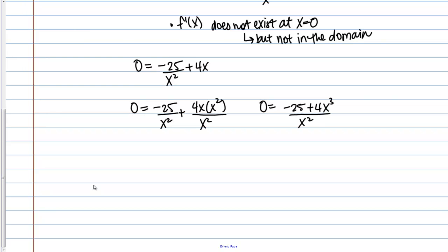So I get 0 = -25 + 4x³ over x². And I want to solve for the x values where this is 0. Now a fraction equals 0 when its numerator equals 0. So now I have 0 = -25 + 4x³. And then I solve for x so 25 = 4x³. x³ = 25/4. And so x = ∛(25/4) which is approximately 1.84. Now this is in the domain, right? This is between 0 and infinity. So this is a critical point.